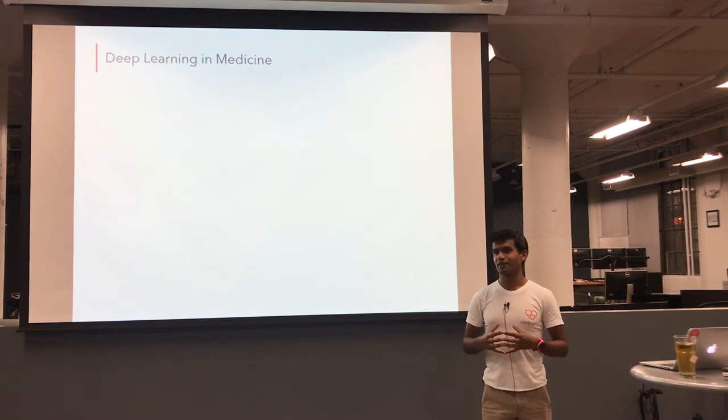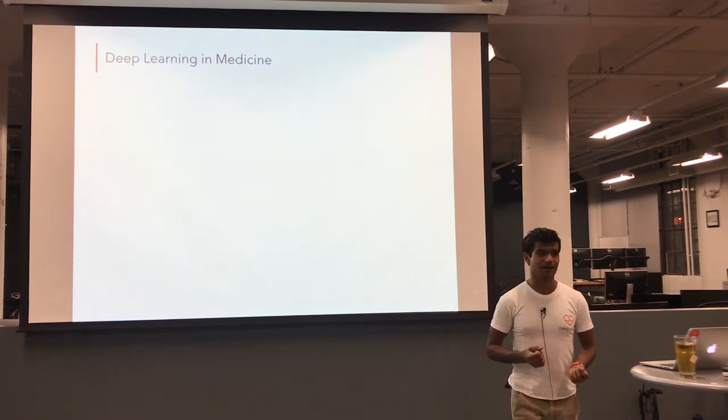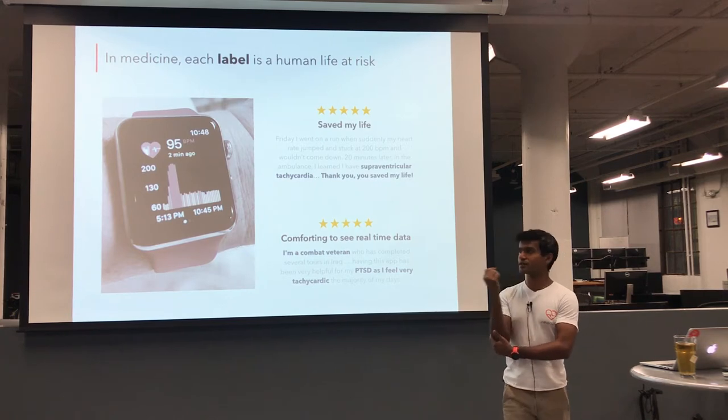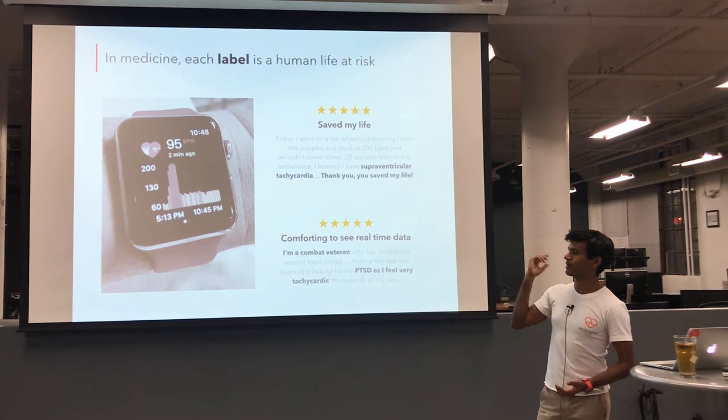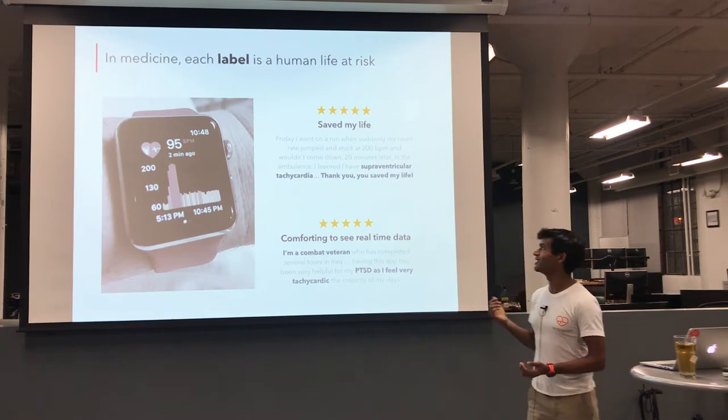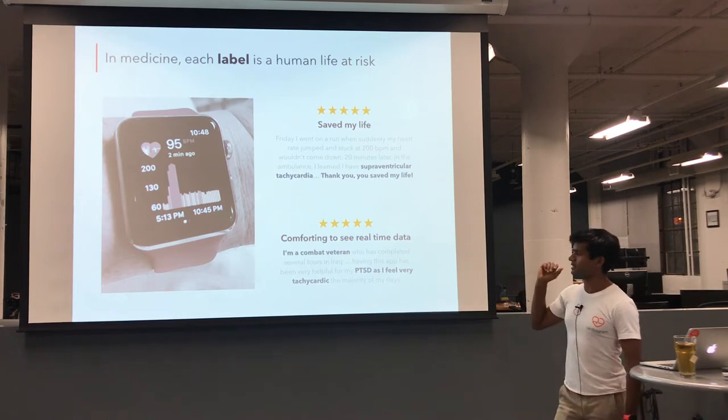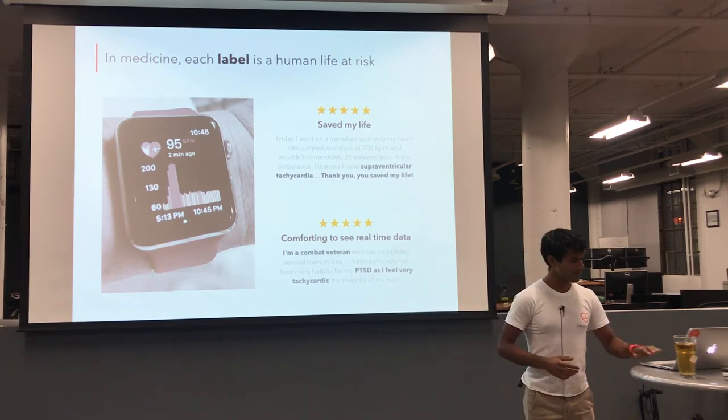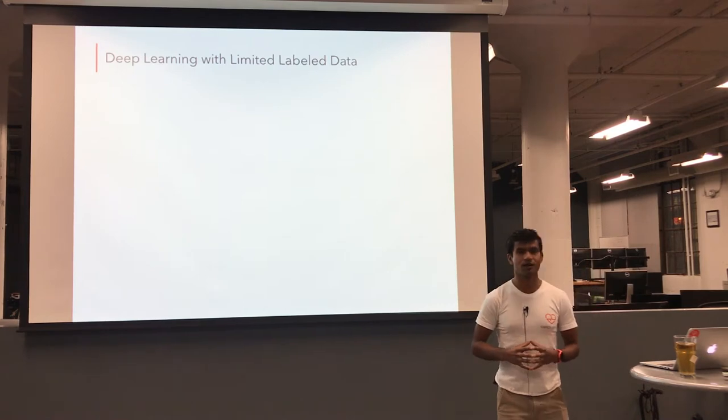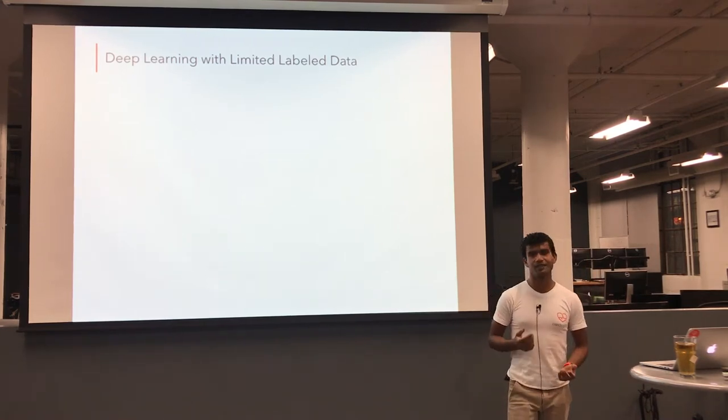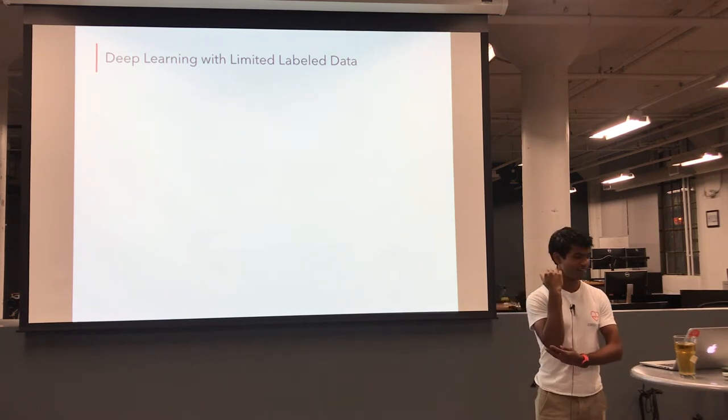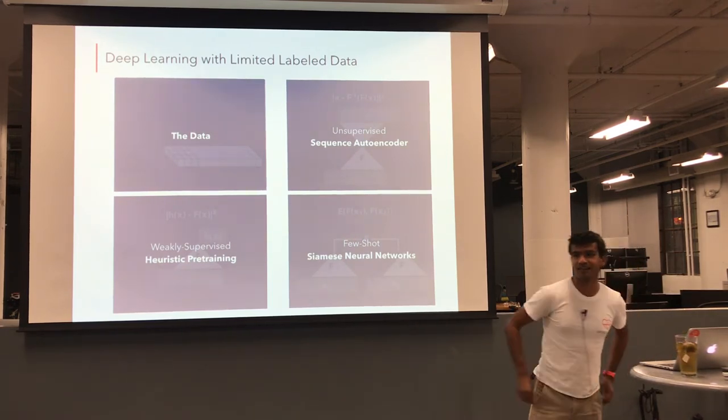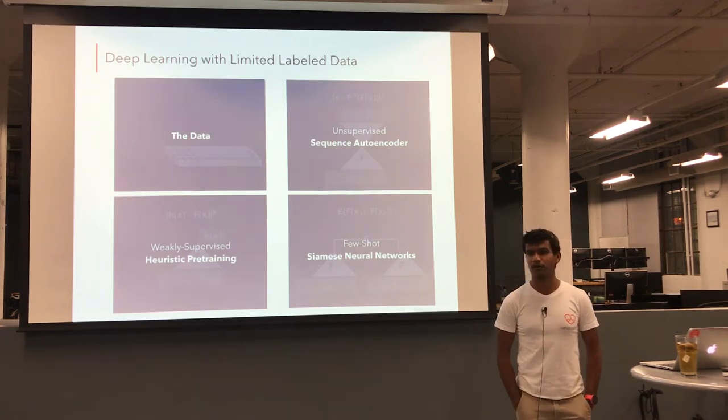So the initial theme that I have for this talk is deep learning in medicine. And the thing to understand with deep learning in medicine is that each label is a human life at risk. So these are two reviews we got in the App Store. They're two labels for us. In the first one, this is actually the user I told you about at the beginning of this talk. This person had supraventricular tachycardia. The second user is a combat veteran experiencing PTSD. So the reason I bring this up is because it shows how hard it is to collect label data.